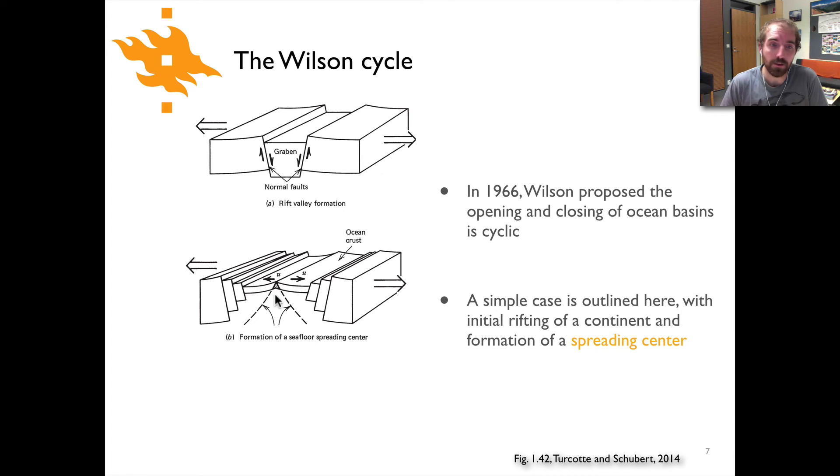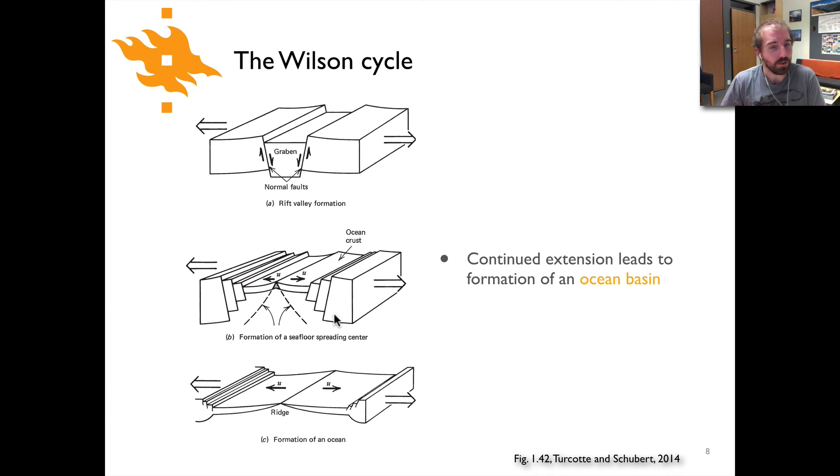As extension continues, we have thinning of the continent and the development of an oceanic basin and the formation of a seafloor spreading center. This is a result of ongoing extension. As extension continues, we're going to form an ocean basin. We've got the plates moving apart, we're forming new plate in between, so we're simply forming a nice ocean basin.